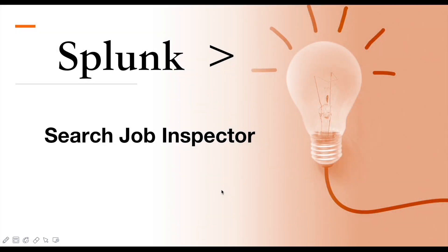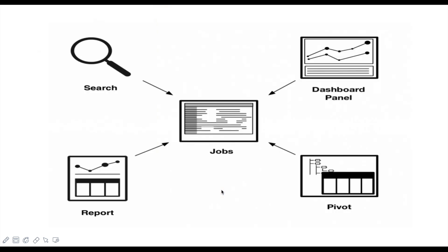Hi friends, hope you all are doing well. This is the next video in this series about Job Inspector. Before that, let's understand what exactly a job is in Splunk. Whenever we run a search, run a dashboard, a user logs in or lands on a dashboard, or we run any pivot or report, Splunk generates a job for each and every activity. In Job Inspector you can see job activity — how the job is performing and what is the status of it.